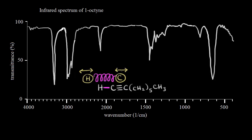Let's look at the IR spectrum for this molecule — we're talking about 1-octane here. If you shine a range of infrared frequencies through a sample of this compound, some of the frequencies are absorbed by the compound. You can tell which frequencies are absorbed by looking at your infrared spectrum. Let's think about these numbers, like 3,000 or 4,000, as representing frequencies of light.